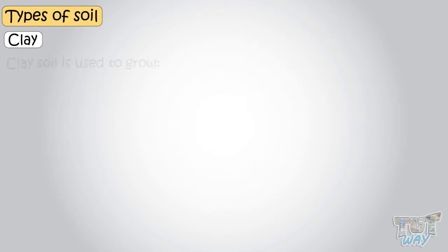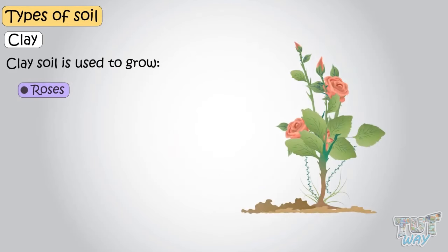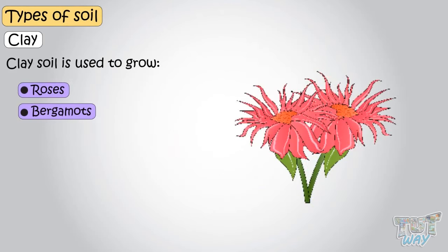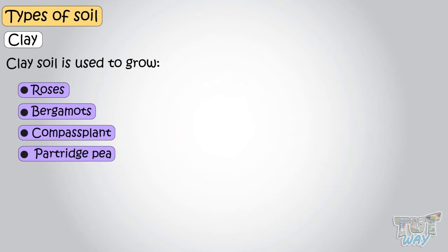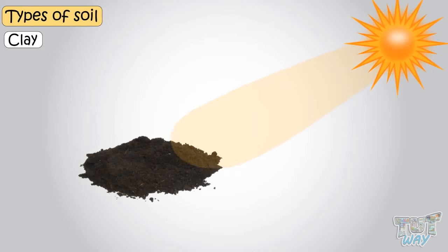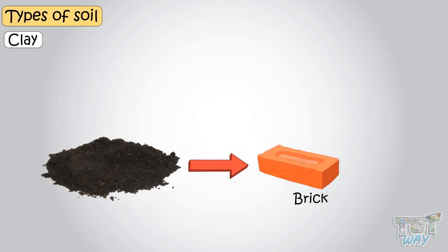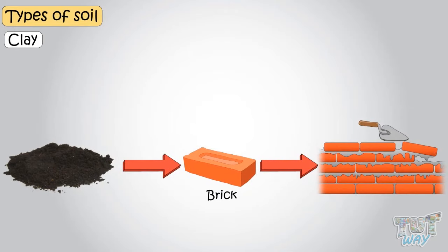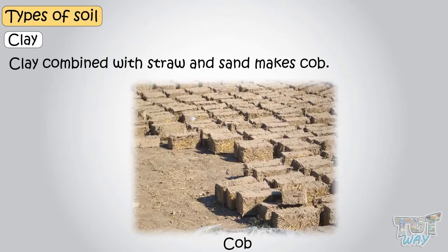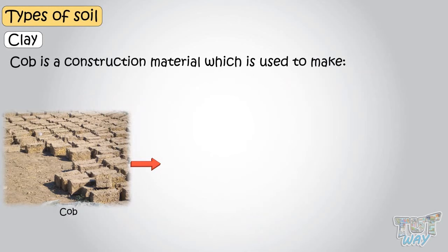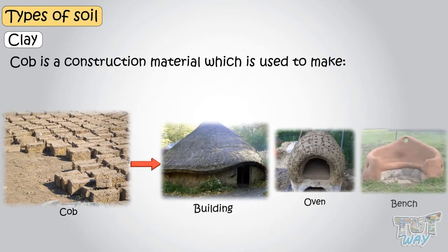Clay soil is used to grow roses, bergamots, compass plant, and partridge pea. Clay can be fired or dried in the sun to make bricks, which are then used in construction of buildings. Clay combined with straw and sand makes cob, and cob is a construction material used to make buildings, ovens, and benches.